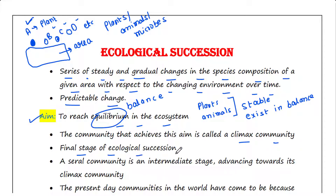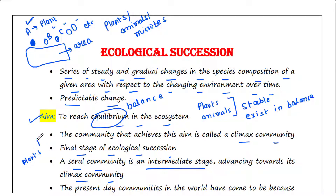The climax community is the final stage of ecological succession. A seral community is an intermediate stage found in ecological succession, advancing towards its climax community — meaning the community has yet to reach its final stage and is not yet balanced. For example, plants may be more abundant while animals are less, so the community is still imbalanced. This intermediate stage is called a seral community.